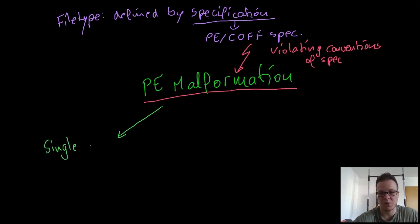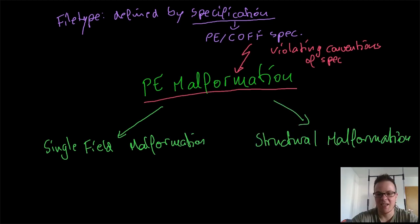I divided malformations into single field malformations and structural malformations. Single malformations are quite simple - it's just one field that has a value that's not permitted according to the specification.